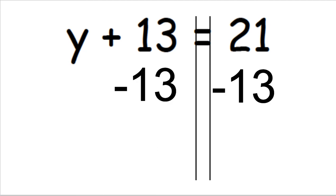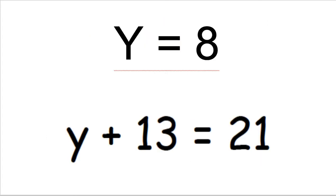Now on the left-hand side, those 13s cancel each other out - they're gone. So plus 13 minus 13 is nothing. On the other side, 21 minus 13 is 8. So I've identified what y equals: y equals 8.